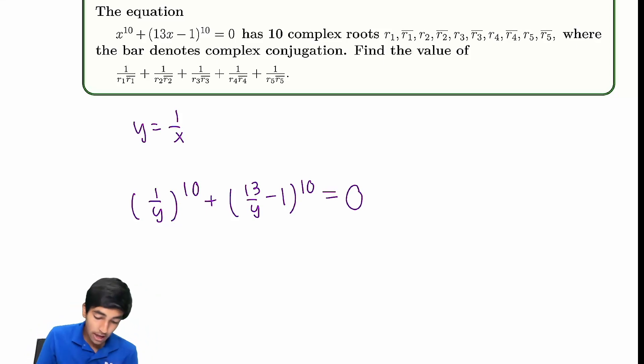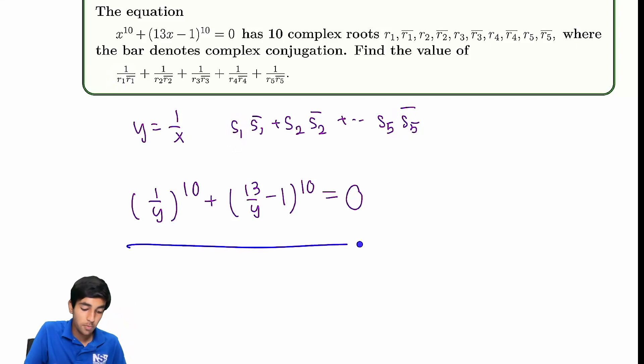So here's what we're going to do. We're going to say y equals 1 over x. And then we put this into our polynomial. So we get 1 over y to the 10th plus (13 over y - 1) to the 10th equals 0. And notice now that all of these roots for x, now all we're asked to find is for y, we basically, if, let's call them s1, let's say these are the roots for y. Now all we have to do is find this. Because now 1 over r equals s, because of the fact that we did this polynomial transformation.